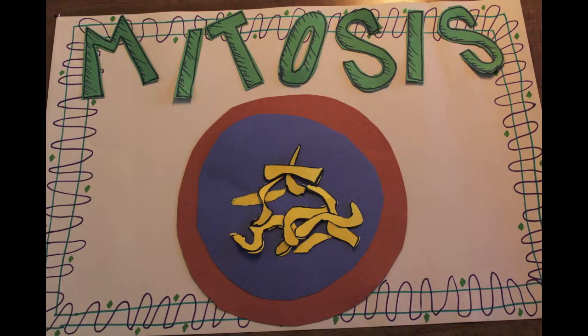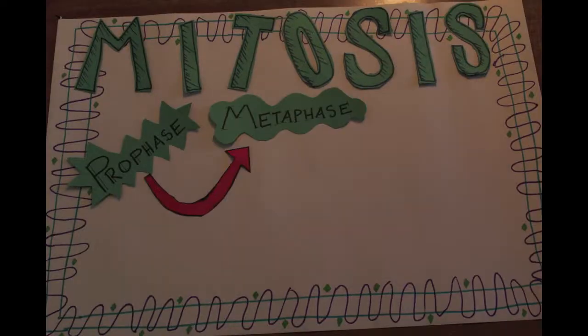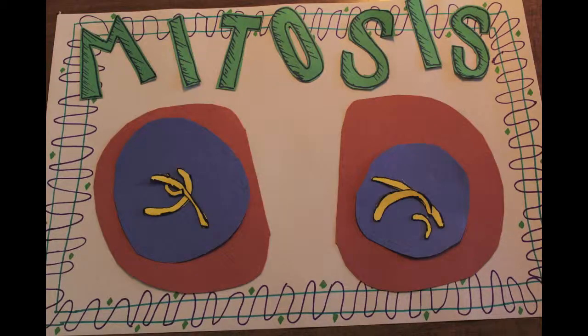Now, just for a little quick review. Mitosis occurs when a cell undergoes prophase, metaphase, anaphase, and telophase and produces two new cells.